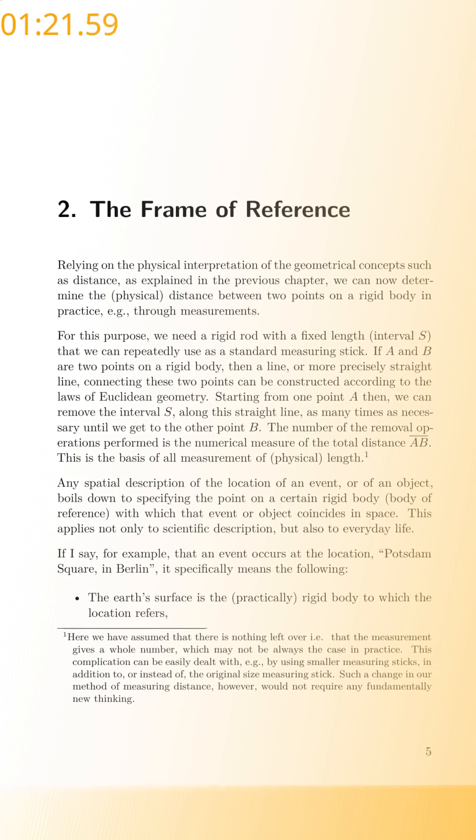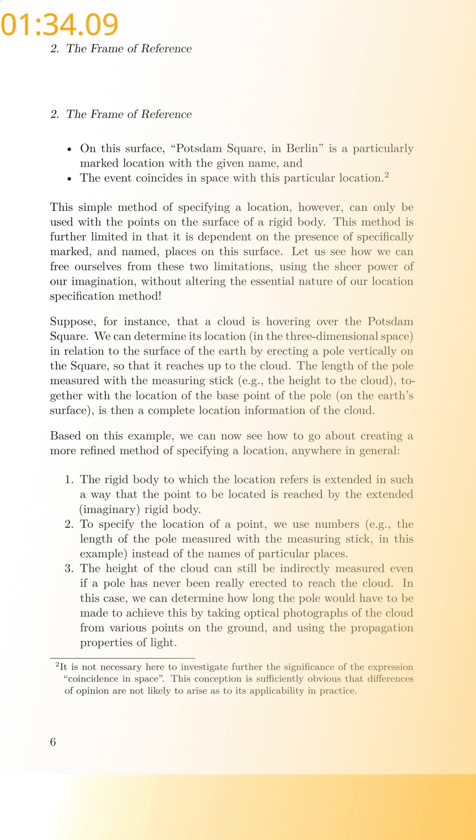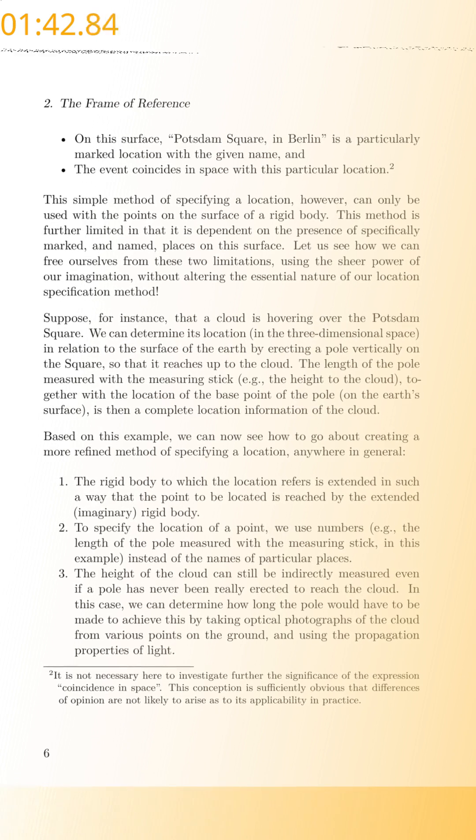If I say, for example, that an event occurs at the location Potsdam Square in Berlin, it specifically means the following. The Earth's surface is the practically rigid body to which the location refers. On this surface, Potsdam Square in Berlin is a particularly marked location with the given name, and the event coincides in space with this particular location.